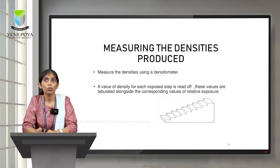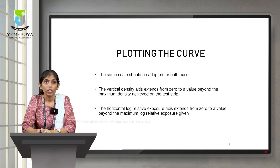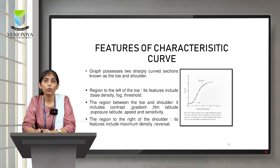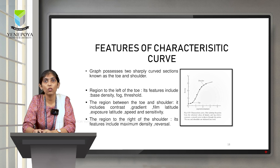The densities produced are measured using a densitometer, which is a device that helps in measuring the densities. The final step is plotting the curve, with density on the y-axis and log relative exposure on the x-axis. This curve has three parts: the region to the left of the toe, which gives base density, fog, and threshold; the region between the toe and the shoulder, which tells about contrast, gradient, film latitude, exposure latitude, speed and sensitivity; and the region to the right of the shoulder, which tells about maximum density and reversal.